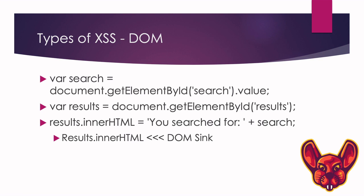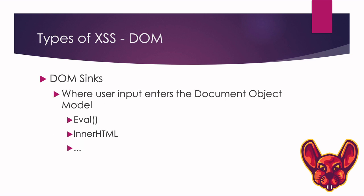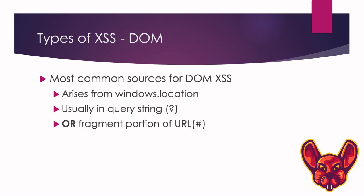DOM-based XSS involves the Document Object Model. A website's source code is something we can inject our code into, and that code can also be injected into the DOM through DOM sinks. One example shown is innerHTML. PortSwigger has a great list of sinks, and jQuery has even more. Don't look for these manually — let tools find DOM sinks, then try to exploit them manually.